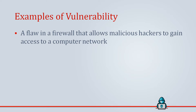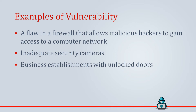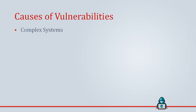Some examples of vulnerability are a flaw in a firewall that allows a malicious hacker to gain access to a computer network, inadequate security cameras, and business establishments with unlocked doors — all of these flaws can be used by others to harm a company or its assets. What causes vulnerability? There are many causes, such as complex systems. Complex systems increase the probability of misconfigurations, flaws or unintended access.